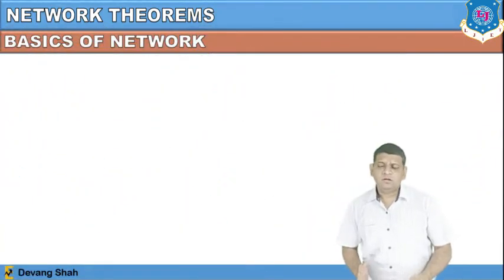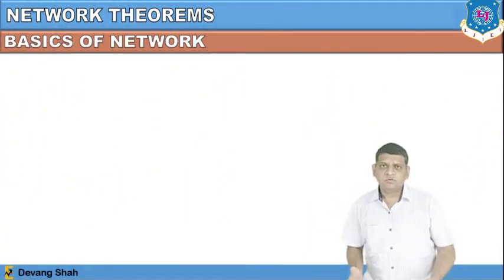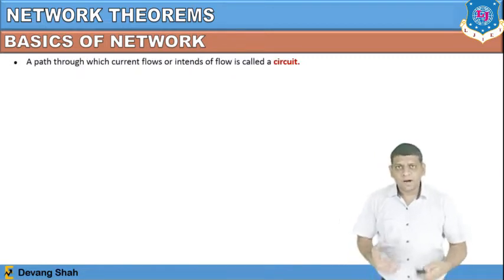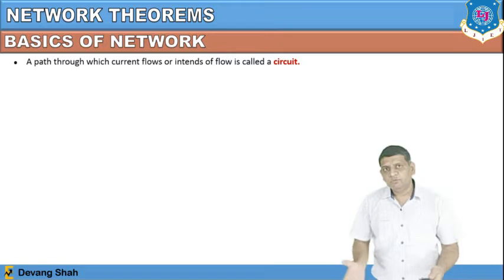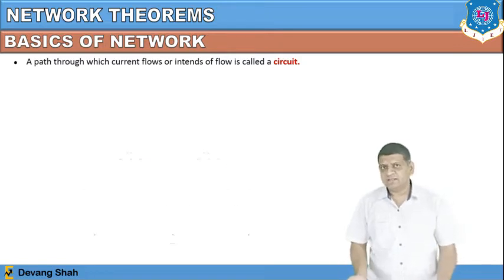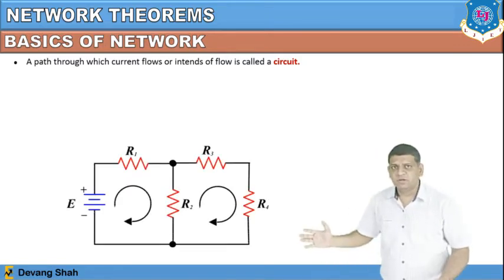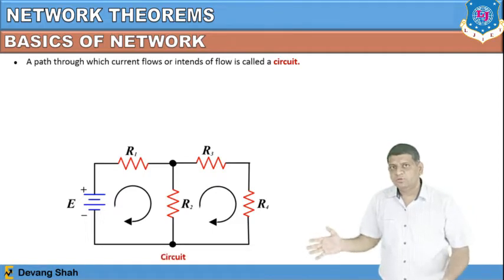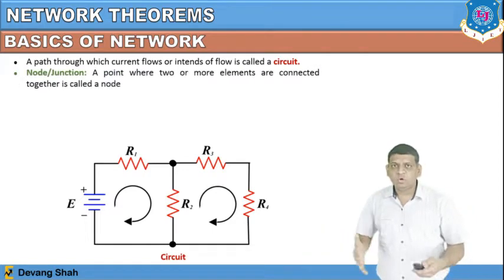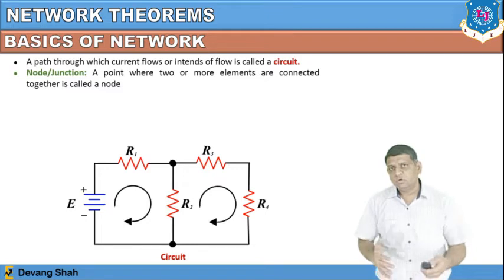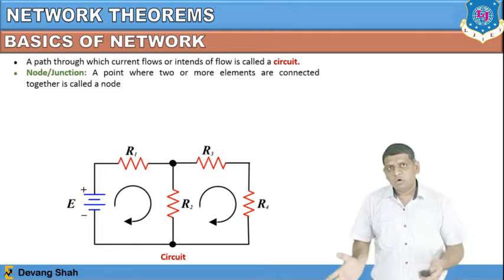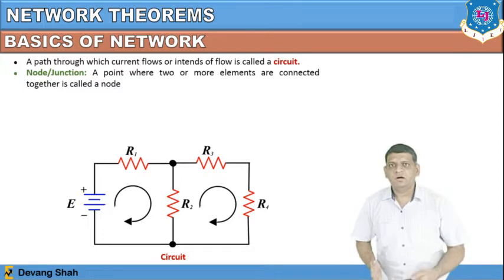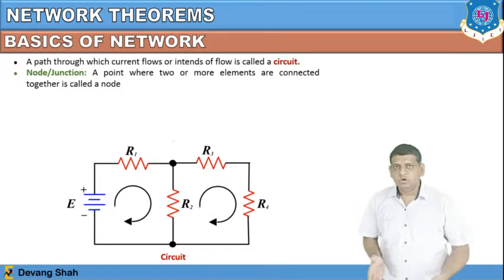Now let's look at the basics of electrical engineering. What is a circuit? The path through which current flows or is intended to flow is defined as a circuit. This is an example of a complete circuit. What is a node or junction? A point where three or more branches are connected, or two or more elements are connected, is defined as a node.